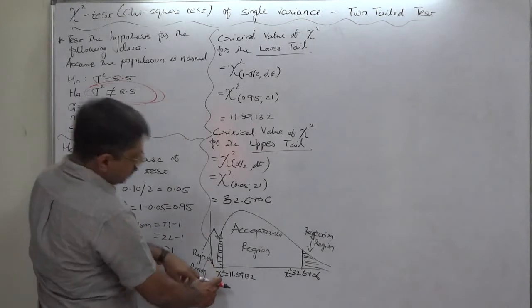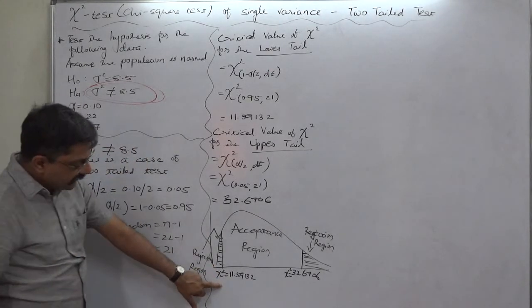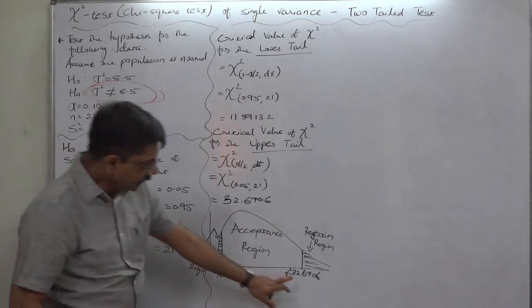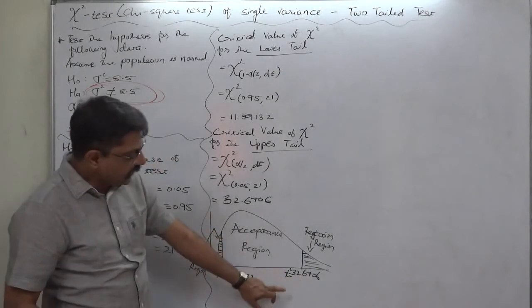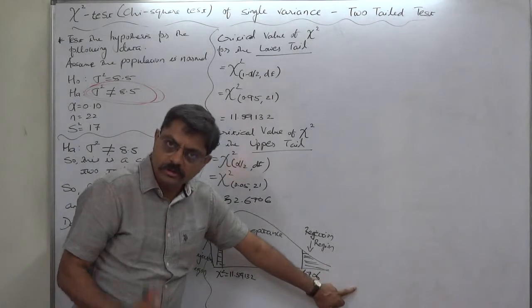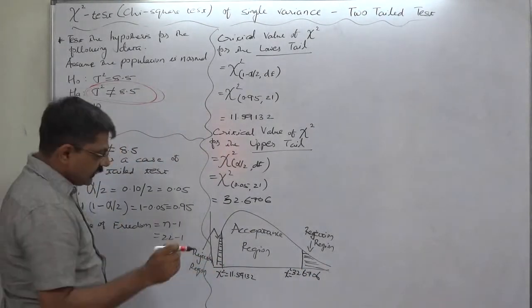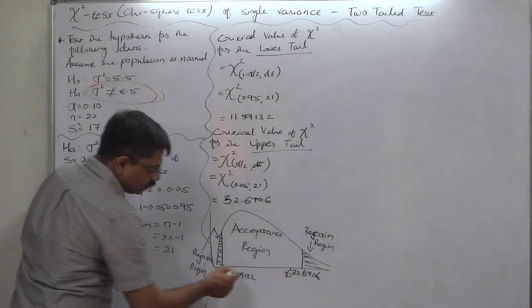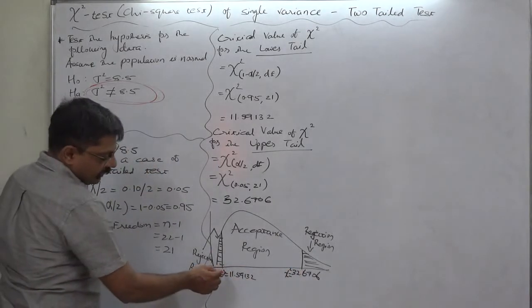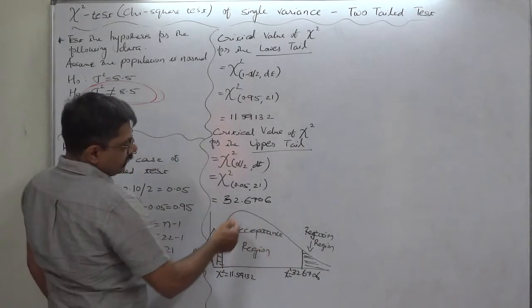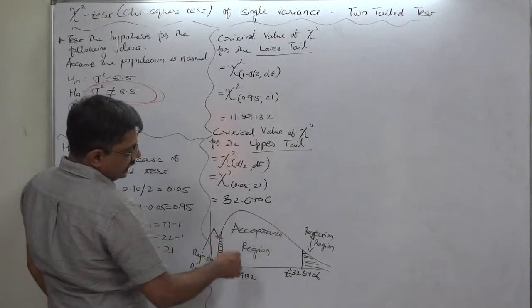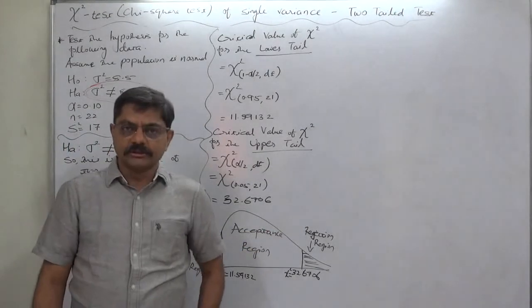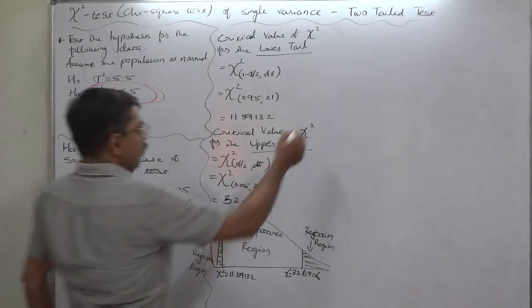To restate: the lower tail critical value of chi-square is 11.59 — if the calculated value is less than this, the null hypothesis is rejected. The upper tail critical value is 32.67 — if the calculated value is greater than this, the null hypothesis is also rejected. Only if the calculated chi-square falls between these two critical values does it fall in the acceptance region and we accept H₀.